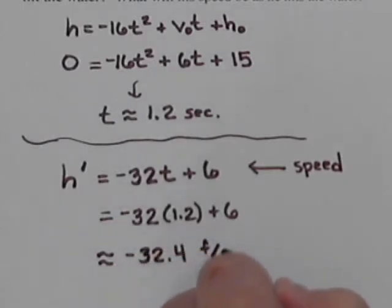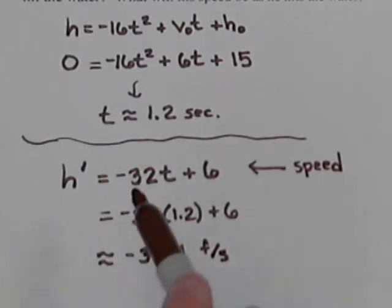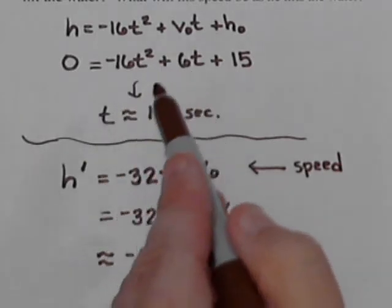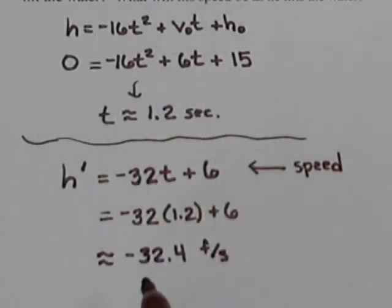So -32 times 1.2 plus 6 gives us -32.4. And this is feet per second. And it's negative because he would be going down. And when we're talking about speeds with the falling object, positive means you're going up. The 6, he started off going up, and then he ends up coming down at about 32.4 feet per second.